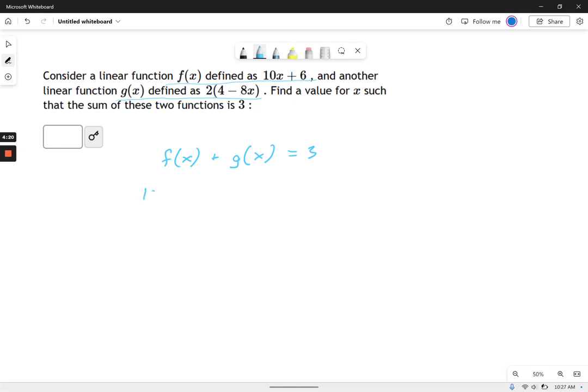Well, f of x is 10x plus 6. g of x is 2 times 4 minus 8x, right? And the sum of those two equals 3.